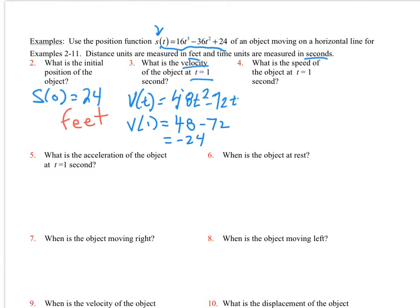And so now if I take and I do V of 1, I'm going to get 48 minus 72, which if I can do this right, would be negative 24. Now I did forget to put units on the first one. And if I do put units on the first one, this would be feet. Now, since we're doing velocity, velocity is a rate of change. And so we divided feet divided by seconds. So for this one, velocity would be negative 24 feet per second.